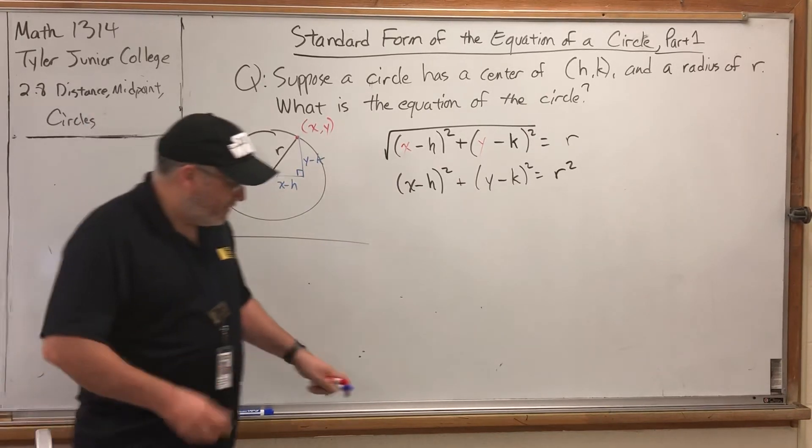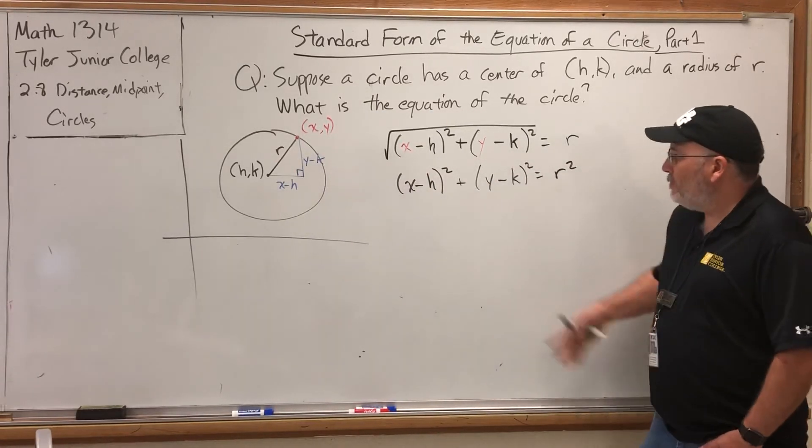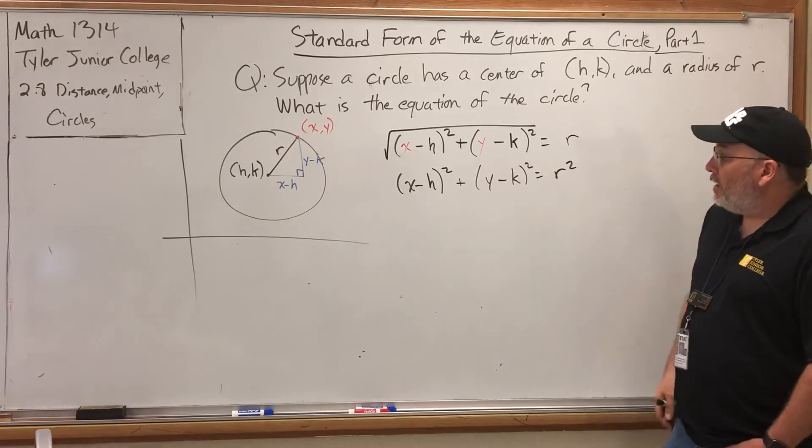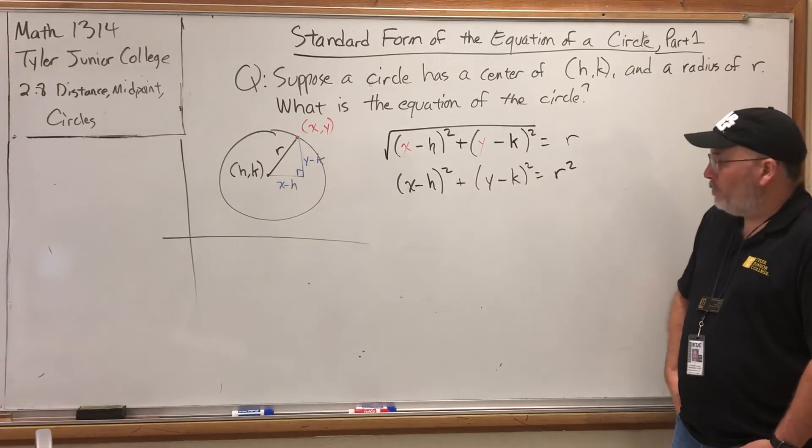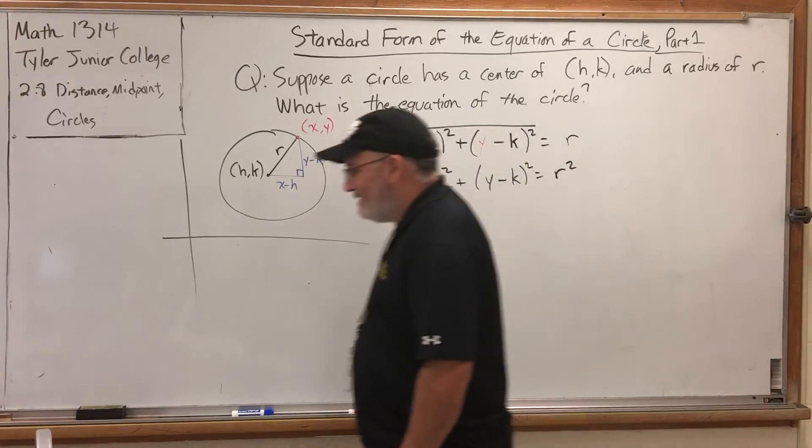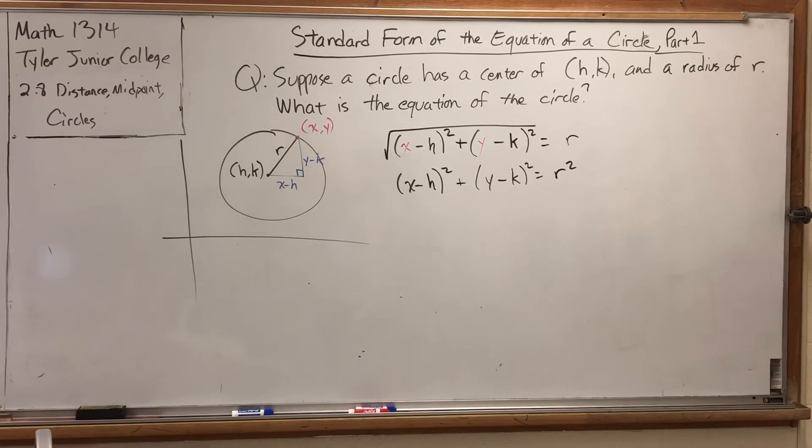So no matter how you approach it, how you try to find the equation of a circle, it all washes out the same. But this one is by far the most acceptable form, the most widely used form. It's called standard form. If I invented math, I would call it center radius form because it contains the center and it contains the radius.